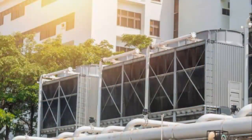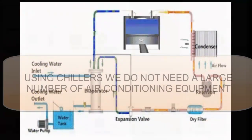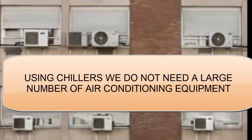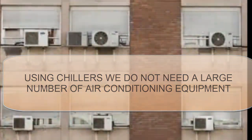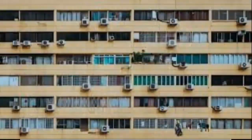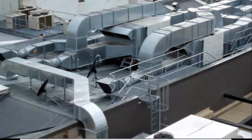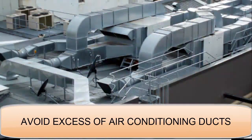Question 2: Why use a chiller? A. In large buildings, the cold generation is centralized in a single point. B. By concentrating the generation of cold, the need for a large number of air conditioning equipment is avoided. C. The need for electrical and power connections throughout the building is avoided. D. Having less equipment reduces the chances of failure.